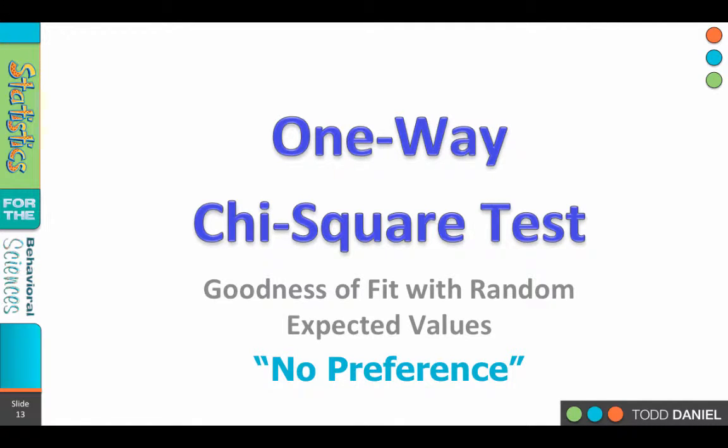We will first learn to calculate a one-way chi-square test with the assumption of randomness, the goodness of fit with random expected values, what I'm going to call no preference. In other words, if sodas are chosen randomly, that means there's no preference for the type of soft drink.